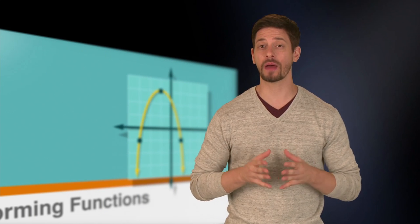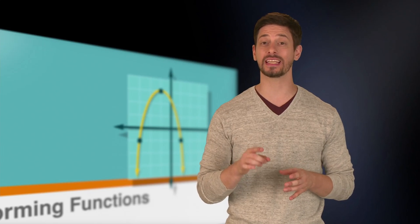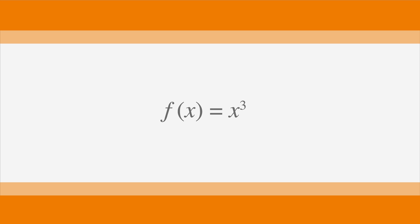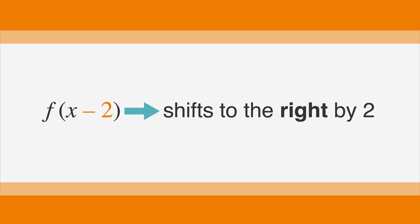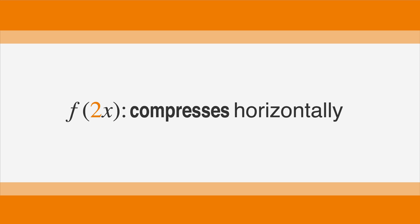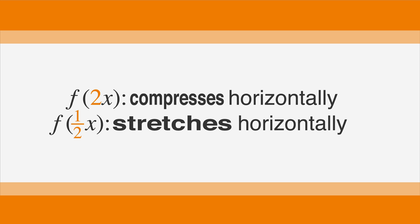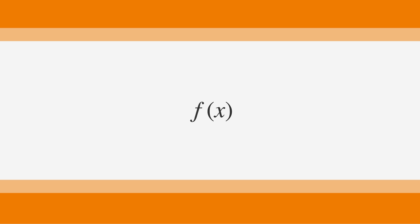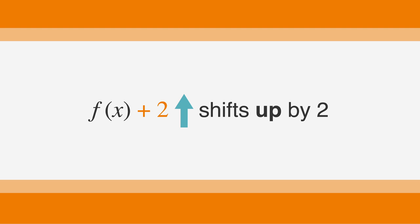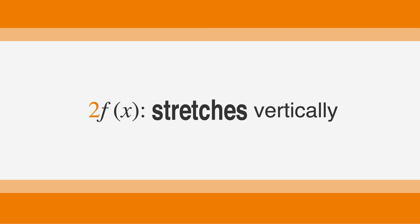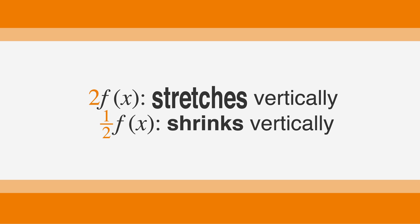Let's do a quick review. If we look for a pattern in the transformations of functions, we'll notice that changes inside of the parentheses affect the x values of the function and shift the function horizontally. However, changing the x value seems to have a counterintuitive effect: subtracting 2 inside the parentheses shifts the function to the right by 2, and adding 2 inside the parentheses shifts the function to the left by 2. Multiplying the x's by 2 compresses the function horizontally, while multiplying the x's by one-half stretches the function horizontally. The changes outside of the parentheses affect the y values and shift the function vertically. Adding 2 outside shifts the function up by 2, subtracting 2 shifts it down by 2, multiplying f of x by 2 stretches the function vertically, and multiplying f of x by one-half shrinks the function vertically.